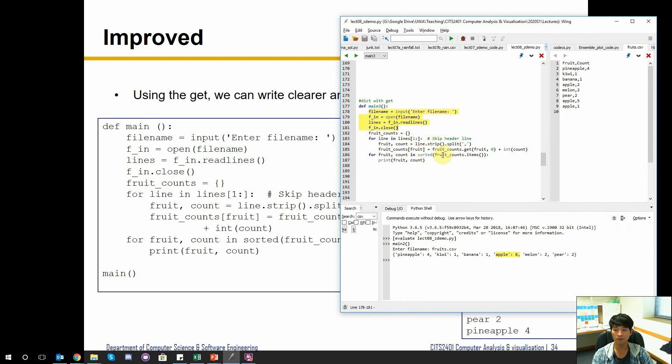So what we have here is exactly the same file handling, but inside the for loop we no longer have the if statement. We don't need to use the if statement. Rather, we just say the fruit count of fruit equals fruit counts dot get fruits or zero.